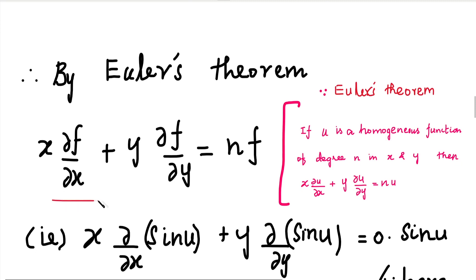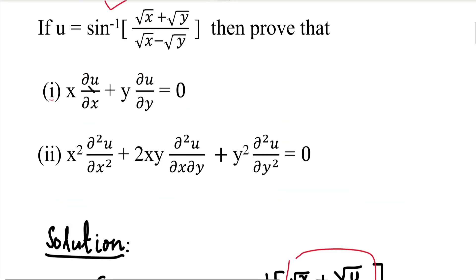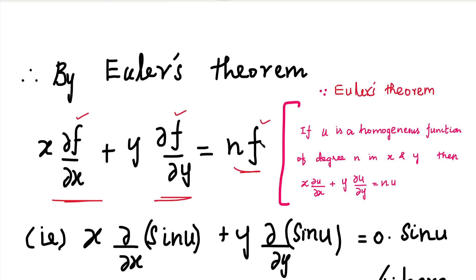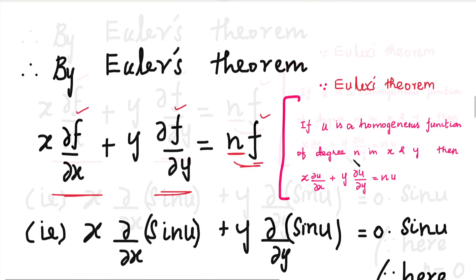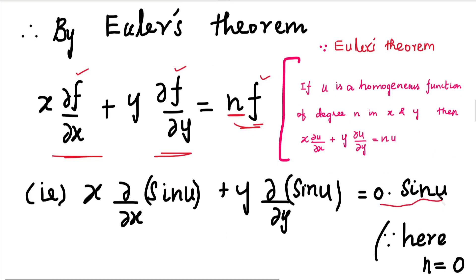By Euler's theorem, since f is a homogeneous function, x times ∂f/∂x plus y times ∂f/∂y equals n times f. In our question the function is u, and from equation (1), f equals sin(u). So the right-hand side is 0 times sin(u), which equals 0.